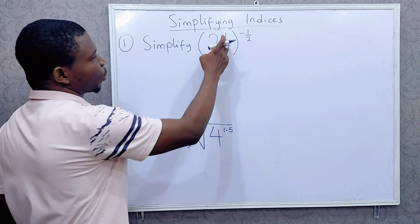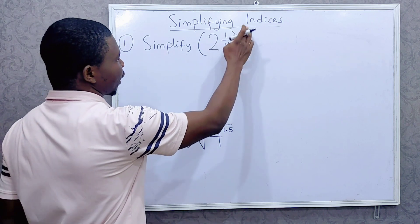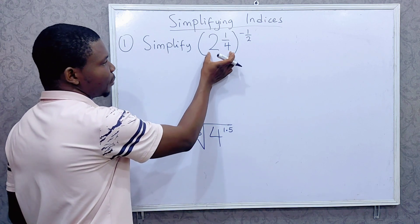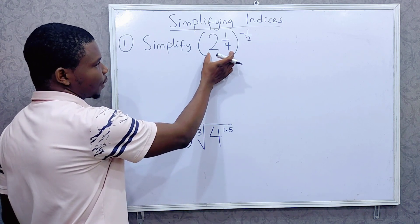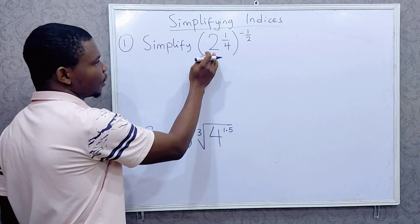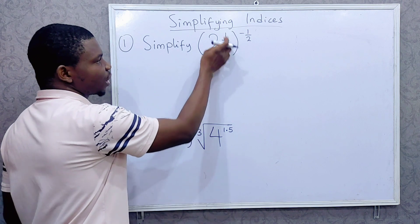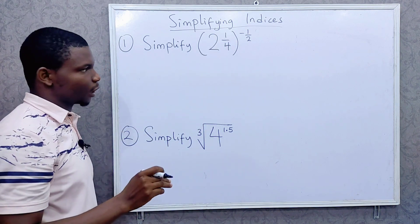Simplify 2 whole number 1 over 4 all raised to the power minus 1 over 2. Now when you have a mixed fraction like this in indices, whether it's in the base or the power, you want to change this mixed fraction to an improper fraction.